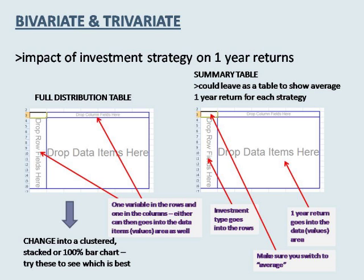The three subsections are: 4.1 Impact of investment type on one year returns; 4.2 Impact of three year returns on one year returns; and 4.3 Impact of three year returns and investment type on one year returns, which is the trivariate. For each subsection we still need to follow the report writing conventions, so a good template is: intro sentence, then the chart or table, features, interpretation and analysis.